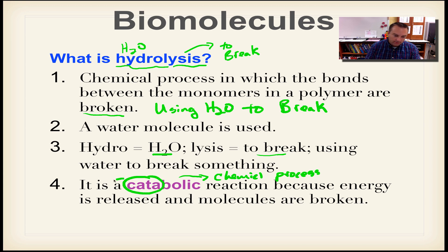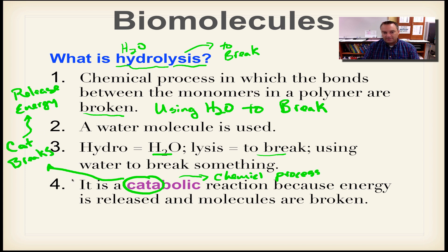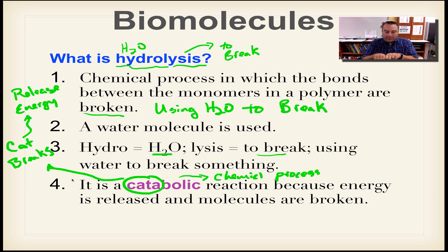The 'cata' part means to break. A great way to remember: the cat breaks stuff — if you have a cat at home, you know they climb on things and knock them over. Whenever you break something in chemistry, you are going to release energy. This is the exact opposite of dehydration synthesis: in dehydration synthesis you took in energy to connect two items and stored it in the new chemical bond; in a catabolic process you break the bond and that releases energy.